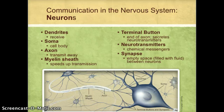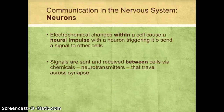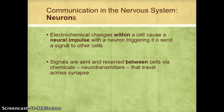Now that you know the different parts of the neuron, we want to talk about how neurons can send and receive signals. There are two different processes at work: within the cell and between the cells. Within the cell, there are electrochemical changes that cause a neural impulse. Between cells — from one neuron to another — signals are sent and received via neurotransmitters, those chemicals that travel across the synapse.